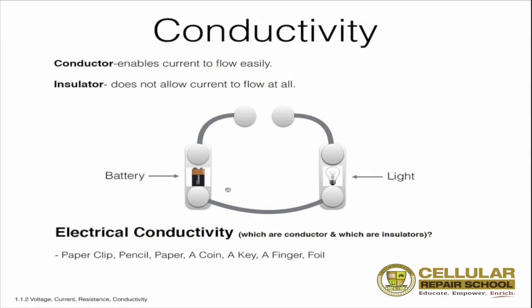In the next part of this training we're going to build this circuit and show you a live example. At the bottom you'll see examples of conductors and insulators. Before you watch the next video, I want you to decide: is a paperclip a good conductor of electricity? Is a pencil a good conductor? What about a piece of paper? What about a key or a coin? And what about your finger — if we put our finger across this open circuit from one dot to the other, would it close the circuit and make the light come on?